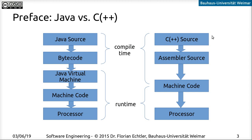On the other hand, if you compile something like C or C++, at compile time it is first converted into assembler source, which is then immediately converted into machine code — a binary file. When you start the program at runtime, that machine code is immediately executed directly on the processor. There's no intermediate step like with Java, where bytecode is first translated by the virtual machine into machine code.